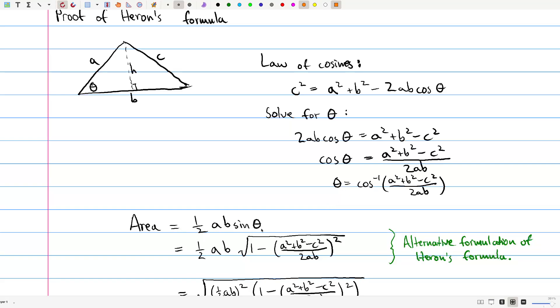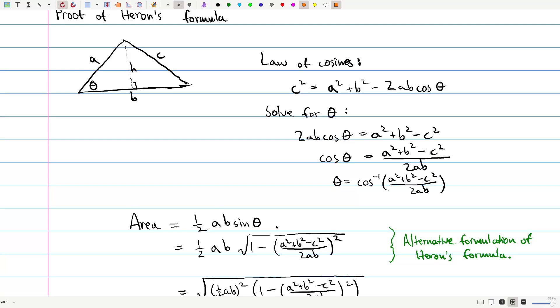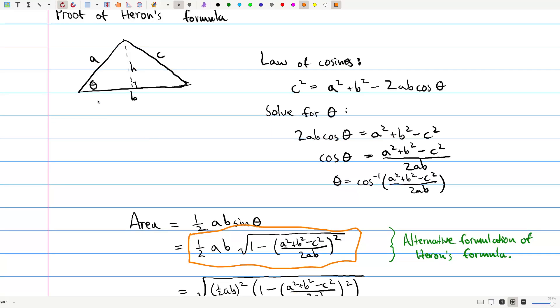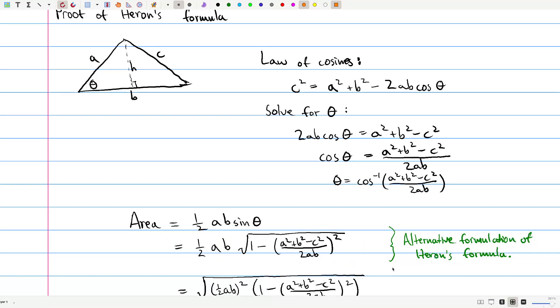So we have theta. The area is one half a b sine theta. We plug it in and use our formula that the sine of cosine inverse is square root of 1 minus what we plugged into cosine inverse squared. And that actually gives us a formula here that it's perfectly fine as a formula for the area of a triangle. Notice it uses a, b, and c, and it doesn't make use of either theta or h. So it uses the knowns immediately. So I'd call it an alternative formulation of Heron's formula.